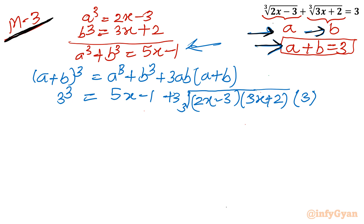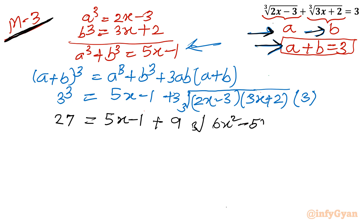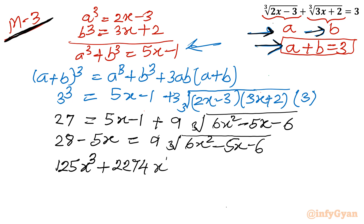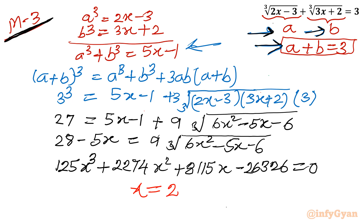After rearranging: 27 = (5x-1) + 9∛(6x²-5x-6). Taking (5x-1) to the left gives 28 - 5x = 9∛(6x²-5x-6) — identical to method 1. Cubing both sides yields the same cubic equation: 125x³ + 2274x² + 8115x - 26326 = 0, and real solution x = 2.